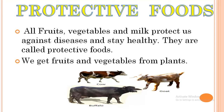The first one is protective food. All fruits, vegetables, and milk products protect us against diseases and keep us healthy. They are called protective food. यानि कि सभी प्रकार के फल, सब्जियां और दूध उत्पाद हमें बीमारियों के खिलाफ बचाते हैं और हमें स्वस्थ रखते हैं. We get fruits and vegetables from plants, and milk from animals like cow, buffalo, and goat.